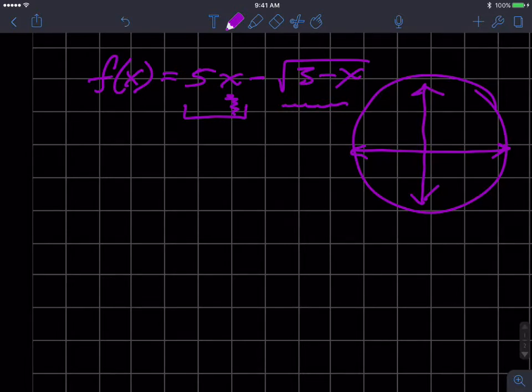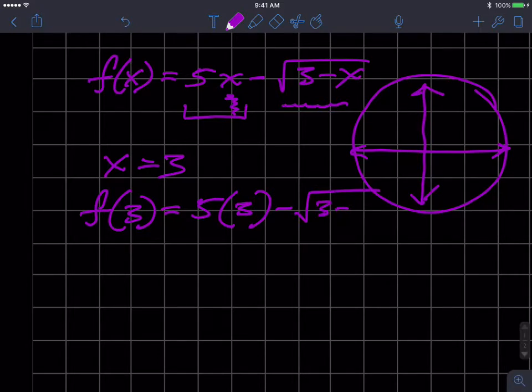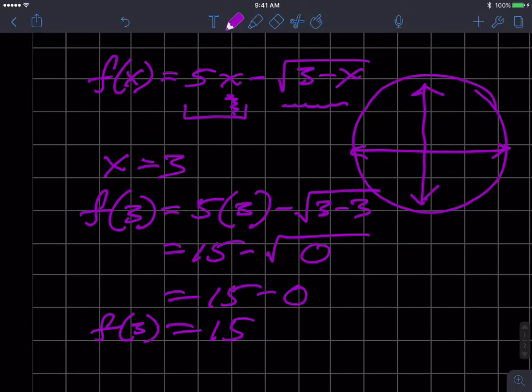Let's put the value 3, x equals 3, in. f(3) equals 5 times 3 minus the square root of 3 minus 3, and we get 15 minus the square root of what's 3 minus 3? Zero. What's the square root of zero? Zero. And 15 minus 0 is 15. So f(3) equals 15. Is this a real number? Yes. So you can plot that number, 3 comma 15, and we're all set. You can plot it on the real plane.